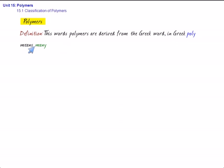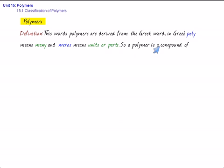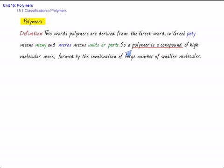Now we are going to discuss the definition. Basically, this word polymers are derived from the Greek word. In Greek, poly means many and meros, M-E-R-O-S, means units or parts. So a polymer is a compound of high molecular mass formed by the combination of large number of small molecules. This is the definition.